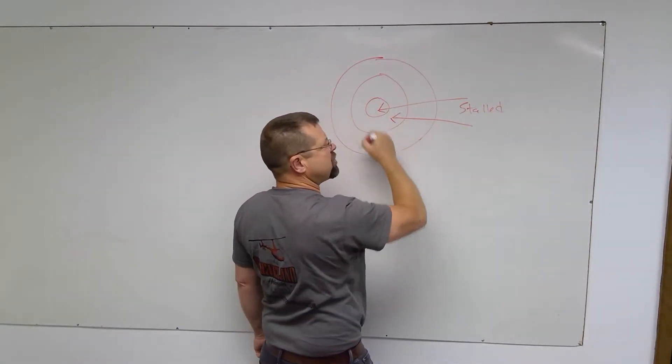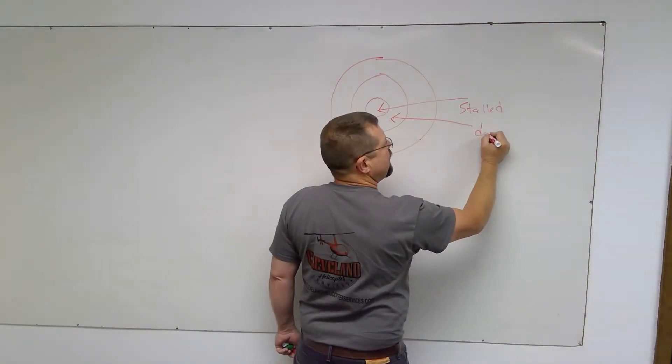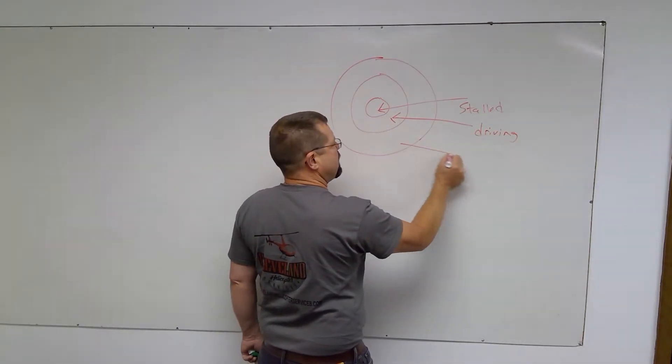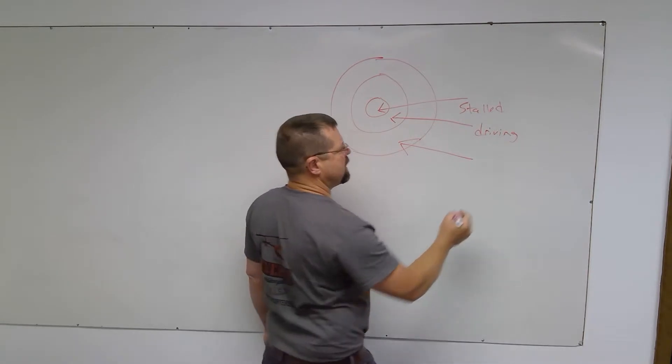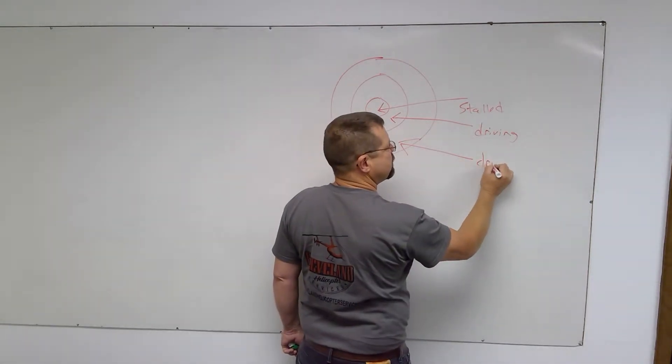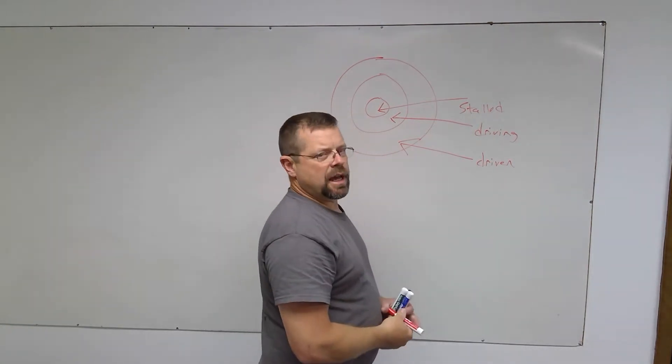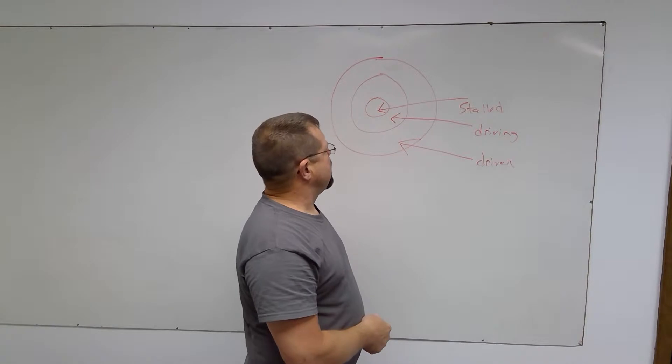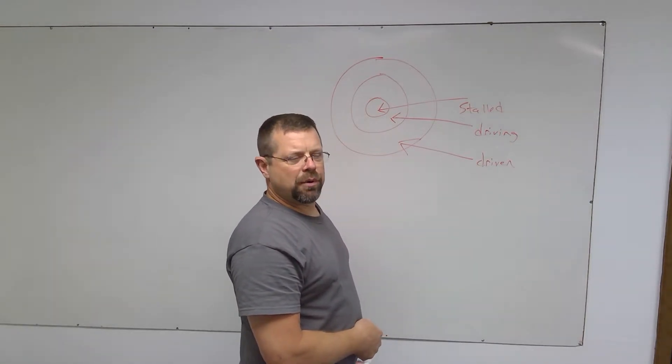The next section out from the stalled region is referred to as the driving region, and the outer area of the rotor system is the driven region. You need to understand that for the examiner. On checkride day, he'll ask about the regions of the rotor system, and you can read up on it also in the helicopter flying handbook.